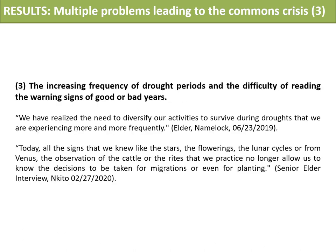In parallel with these impossibilities of access to water resources and an individualization of infrastructure, it is possible to observe an increase in frequency of droughts and intense climatic events. This contributes to a change from semi-nomadic pastoral practices towards the progressive and total sedentarization and intensification of agriculture. I quote: 'We have realized the need to diversify our activities to survive during droughts that we are experiencing more and more frequently.' These phenomena are accompanied by impossibilities for certain Maasai to use their traditional ecological knowledge, and in particular the warning signs of rainy years or droughts. I quote also: 'Today, all the signs that we knew, like the stars, the flowerings, the lunar cycle, or from Venus, the observation of the cattle or the rites that we practice, no longer allow us to know the decisions to be taken, for migrations or for planting.' In this sense, access to their own land and therefore private rights — or the need to practice agriculture to fight droughts and interferences, or to drill a private borehole or artificial ponds — seems to be a necessity.